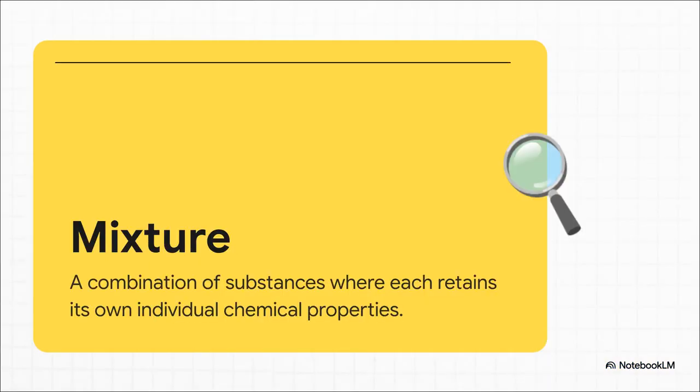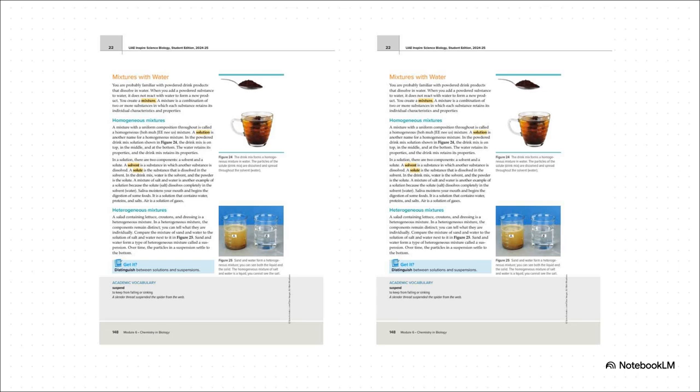So when water dissolves something, what it's creating is a mixture. And a mixture is really simple. It's just a combination of stuff where all the original ingredients are still in there. They're just all jumbled up together. And mixtures come in two main flavors. You've got homogeneous mixtures where everything is so evenly mixed you can't even see the separate parts. Think about stirring a drink mix into water. And then you have heterogeneous ones where you can clearly see the different bits and pieces, like trying to mix sand and water.